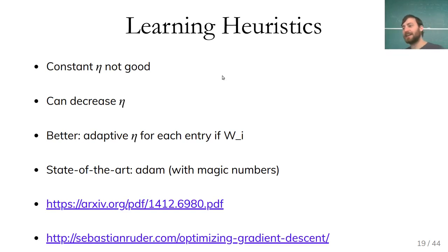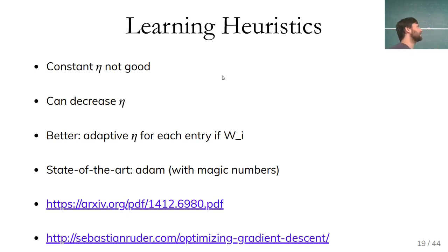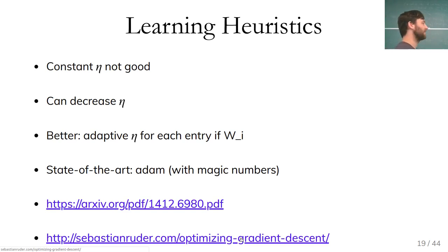When I made this slide, Adam was state of the art. Someone then found a bug in the proof of Adam — the algorithm doesn't converge in simple cases — but it was used successfully in industry for a couple of years before that. Things might work even if they're broken, or things might not work and you don't know why, because non-convex optimization makes it hard to assess solution quality. There are many heuristics. I give two references: Adam and a blog post on different heuristics, though even that is a year old and has only half the available heuristics.